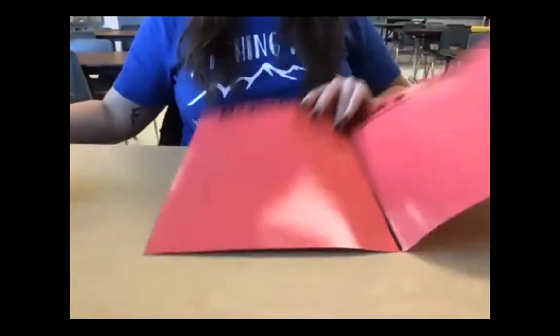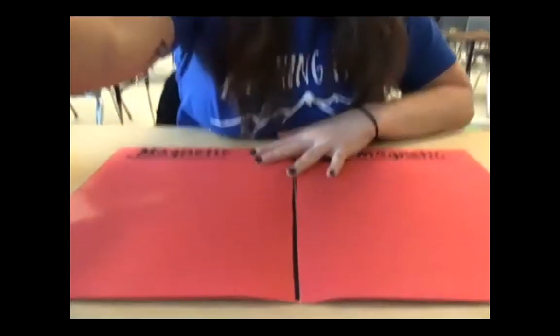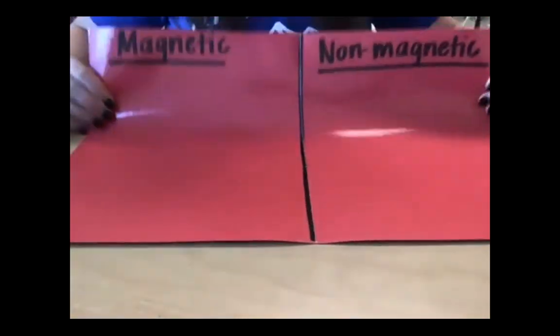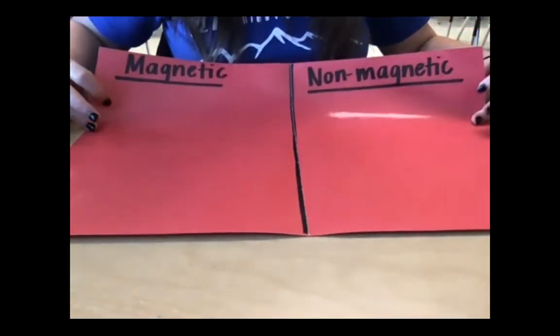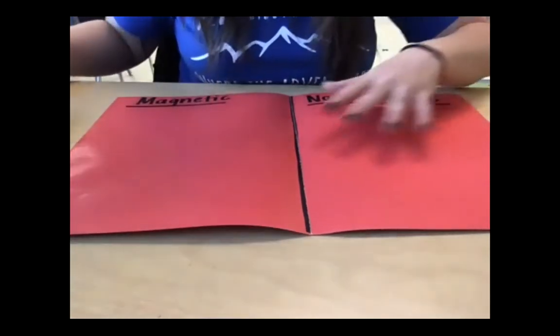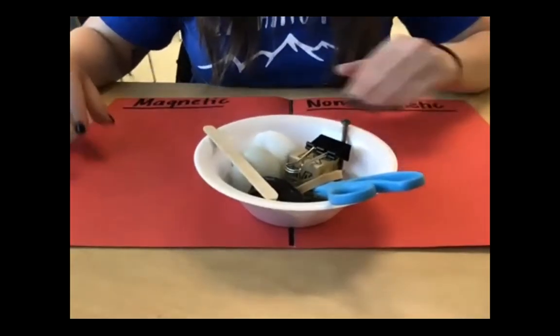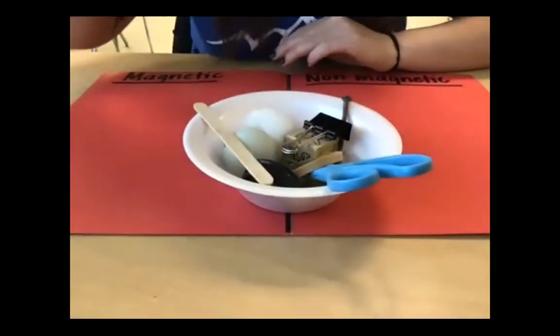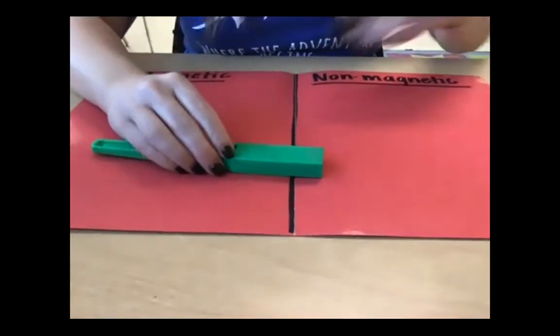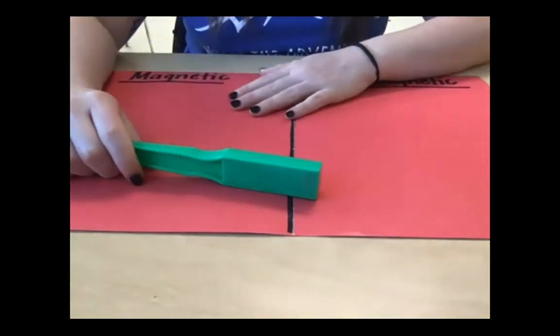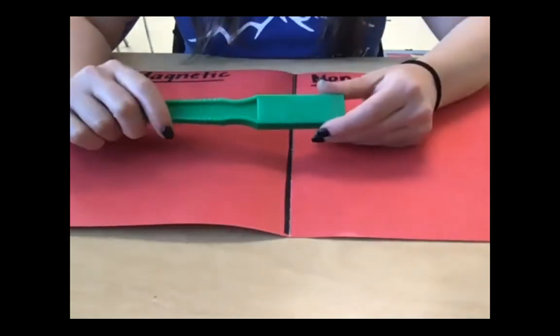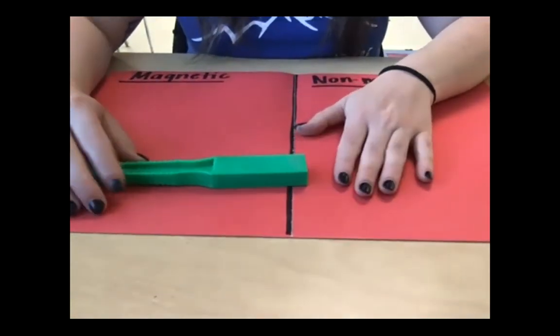For everyone else, we are going to continue with a little sort. Right here I have a sorting mat. This side says magnetic, and this side says non-magnetic. Right here I have a bowl of some different objects. We're not going to sort all of them, but we're going to test some of them using my wand magnet to see which ones are attracted to the magnet and which ones are not.